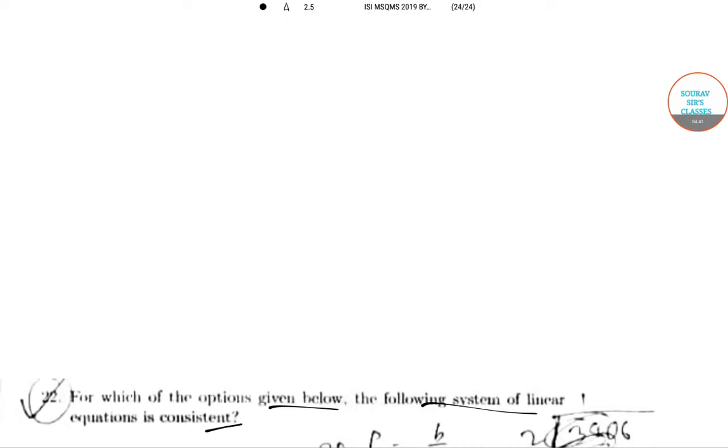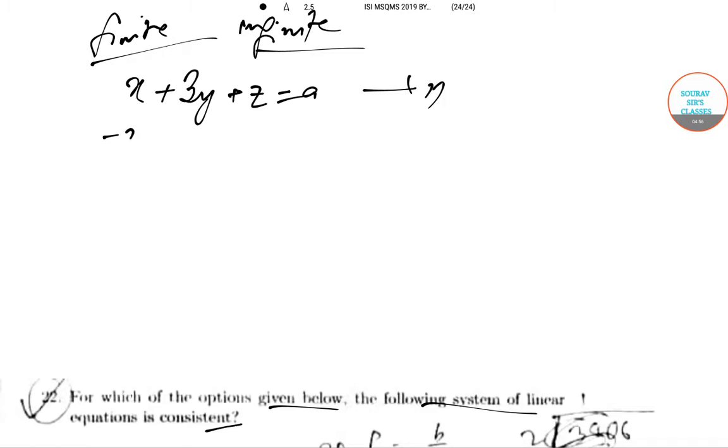The system of linear equations provided to us is: x + 3y + z = a, let it be equation 1; -x - 2y + z = b, let it be equation 2; 3x + 7y - z = c, that is equation 3.